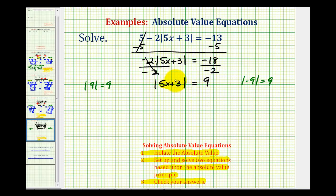We'll now set 5x plus 3 equal to positive 9 and 5x plus 3 equal to negative 9. So the first equation is 5x plus 3 equals 9, or the second equation is 5x plus 3 equals negative 9. Notice how the first equation just dropped the absolute value, and for the second equation we drop the absolute value and change the sign of the 9.